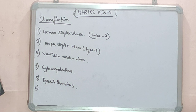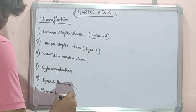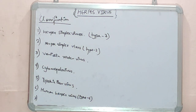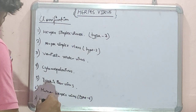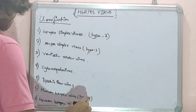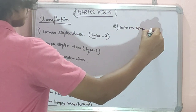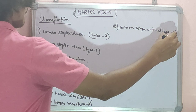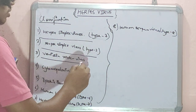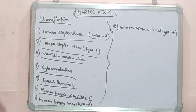Next we have Human Herpes Virus Type 6. Next we have Human Herpes Virus Type 7. And the last one is Human Herpes Virus Type 8. These are some of the important classifications you need to know.